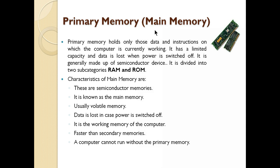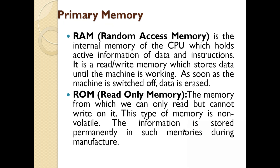Next memory is primary memory, also called main memory. This primary memory holds your data, programs, inputs, and outputs — whatever is going on in the computer. It has limited capacity and data is lost whenever power is switched off or there is a system failure. It is divided into two parts: RAM and ROM. Characteristics: it is semiconductor memory, it's a volatile memory meaning data can be lost, it's the active memory, and it's faster than secondary memory.